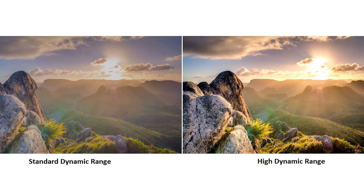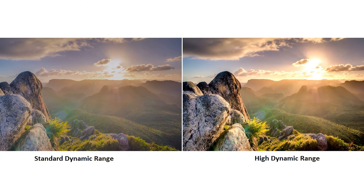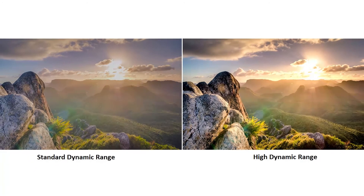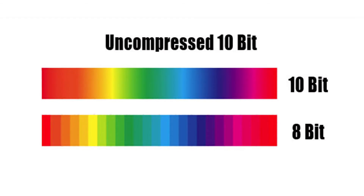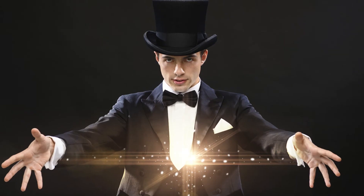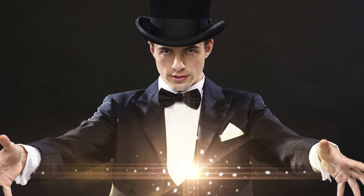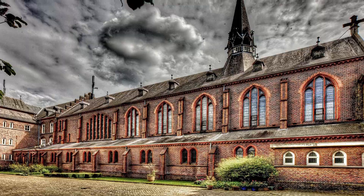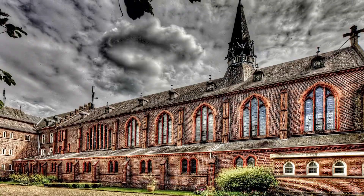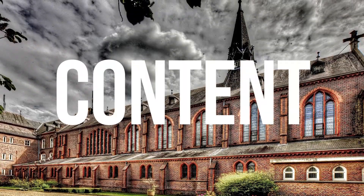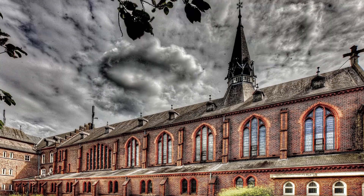HDR displays are not going to make your standard videos or films look better. If they're made in 8-bit colour, HDR displays can't magically add something to that — they're going to show them in 8-bit colour. Which is why the third requirement for an HDR display is content which is encoded in 10 or 12-bit colour.